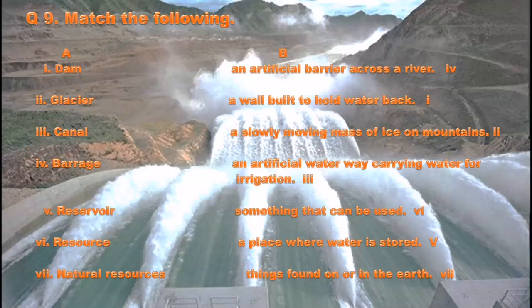Number 6, Resource: something that can be used. Number 7, Natural Resources: things found on or in the earth.